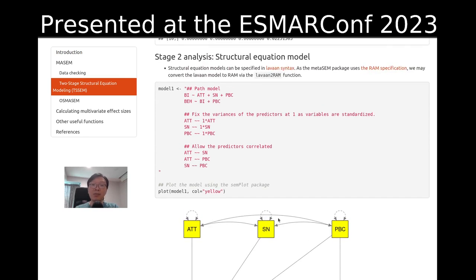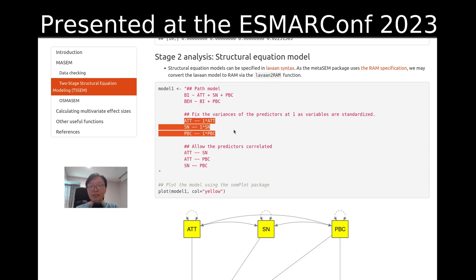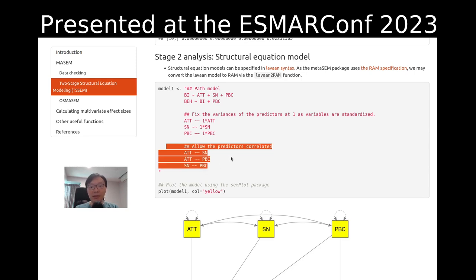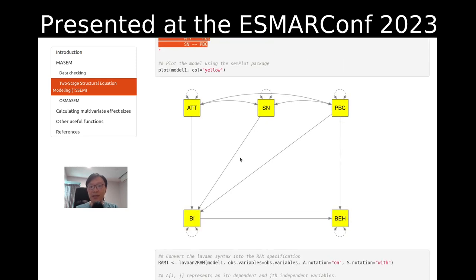Now we can fit the structural equation model. To specify the model, we can use Lavaan syntax. We save it as model 1 and specify the path coefficients. Since we are analyzing a correlation matrix, the variances of the independent variables are fixed at 1. We also allow the predictors to be correlated. Here is the graphical representation of our model.